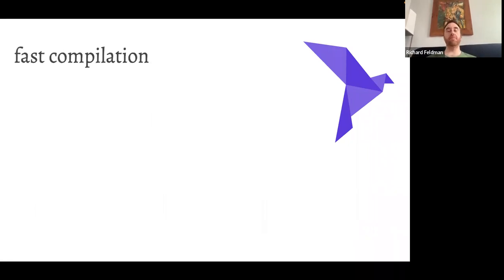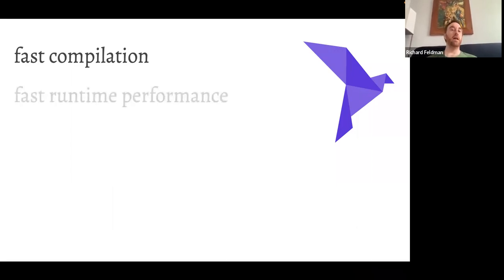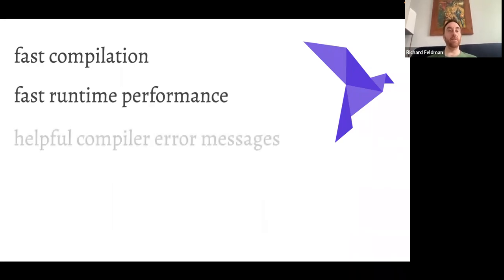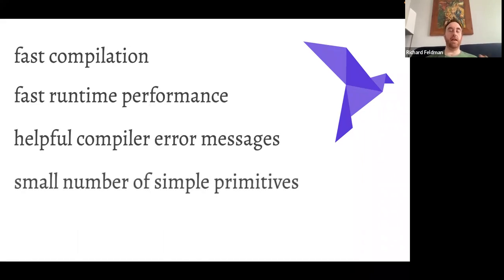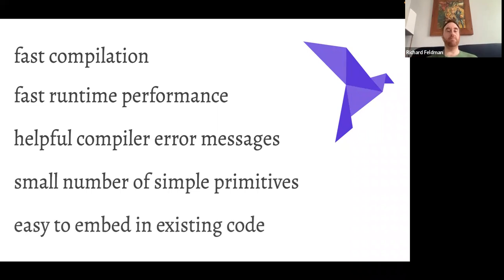Things that are really important to me about Roc: the compiler is really fast — the language is designed to support fast compilation and we've spent a lot of time making the compiler go as fast as we can. Also, fast runtime performance — definitely going to talk about that in detail later. Helpful compiler error messages — I'll give a brief example. From a language design perspective, having a small number of simple language primitives. And finally, being able to easily embed Roc in existing code.